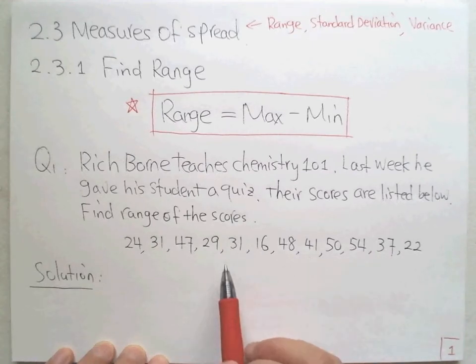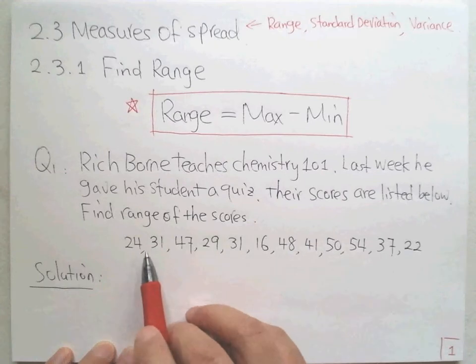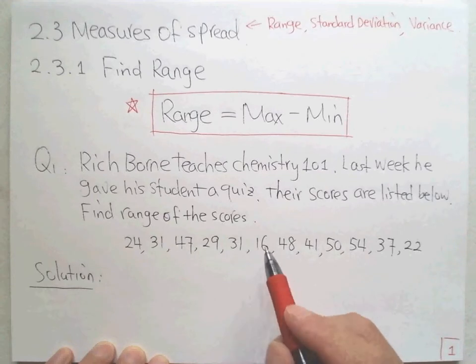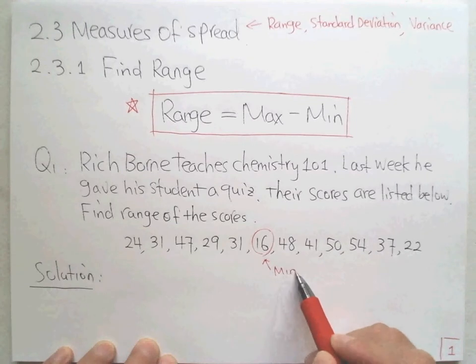Here, I'm going to find the minimal and the maximum by myself. Look at it. This is smaller than this. Is this the smallest? Yes, 16 is the minimal. So we found this is the minimal data, the smallest.